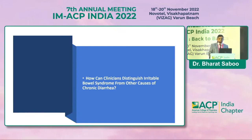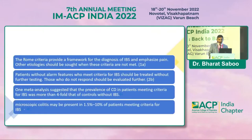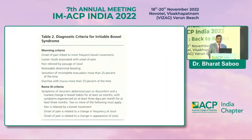The Rome criteria provides the framework for diagnosing IBS. Other etiologies should be sought when these criteria are not met. Patients without alarm features who meet IBS criteria should be treated without further testing. One meta-analysis suggested the prevalence of celiac disease in patients meeting IBS criteria was more than four times that of controls. Rome 3 criteria include recurrent abdominal pain relieved by bowel movement, with onset related to changes in stool frequency and appearance.